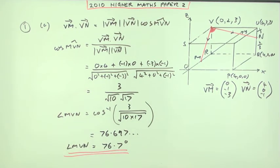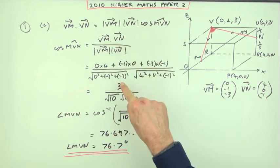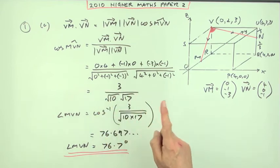And the five marks for this are quite clear. They go one for the formula, then one for the scalar product, one for this length, one for that length, and then finally one for the final answer.